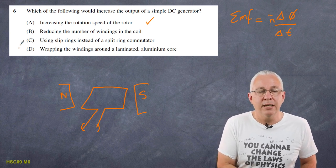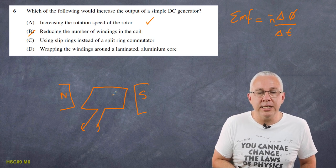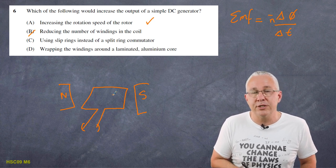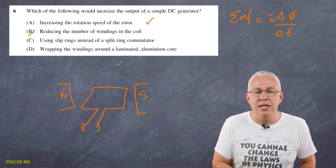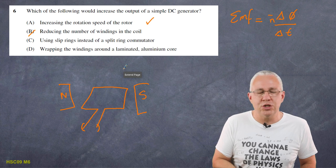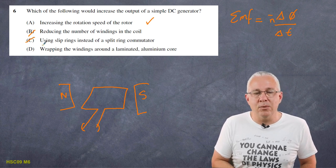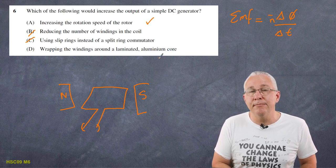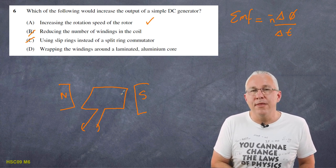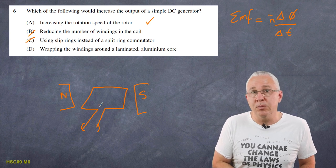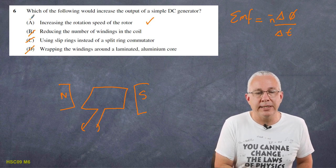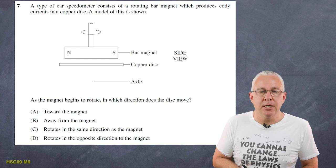Option C: using a slip ring instead of a split ring. A DC generator needs a split ring to ensure the EMF (and resulting current) remains in the same direction. A slip ring converts it into an AC generator, which is not what we want — so C is out. Option D: wrapping the windings around a laminated aluminium core. This gives greater flux linkage with an iron core, but an aluminium core won't increase output beyond the original setup. So the correct answer is A.